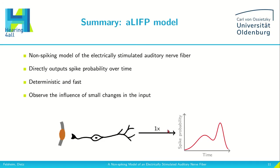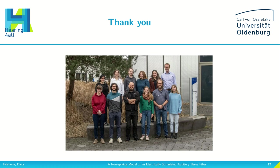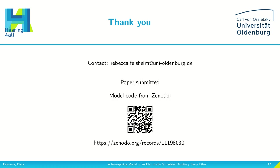Let me wrap everything up. I have presented a non-spiking model of the electrically stimulated auditory nerve fibre. This model directly outputs the spike probability over time. It is deterministic and fast, as I've just demonstrated. We are able to observe the influence of small changes in the input onto the output. I would like to thank my team for supporting me. If you have any questions you can either ask me now or write me an email. We have also submitted a paper on this, and if you are interested in using the model you can download the code from Zenodo.